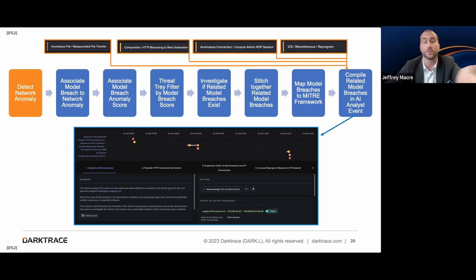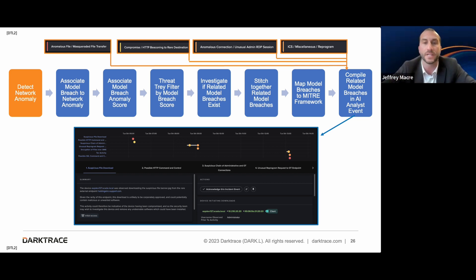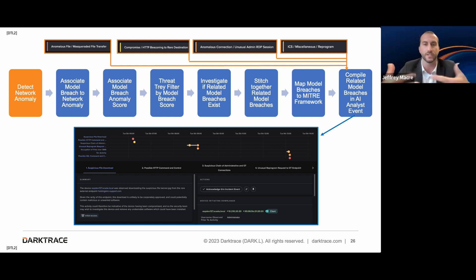Jumping into one of these model breaches or an incident you can see on your screen, we break down that same flow visually. You see four tabs across the screen — those are four individual model breaches. From those four individual model breaches, we've stitched together an incident. These model breaches are associated, and we have evidence and correlation between them to show how they are related.